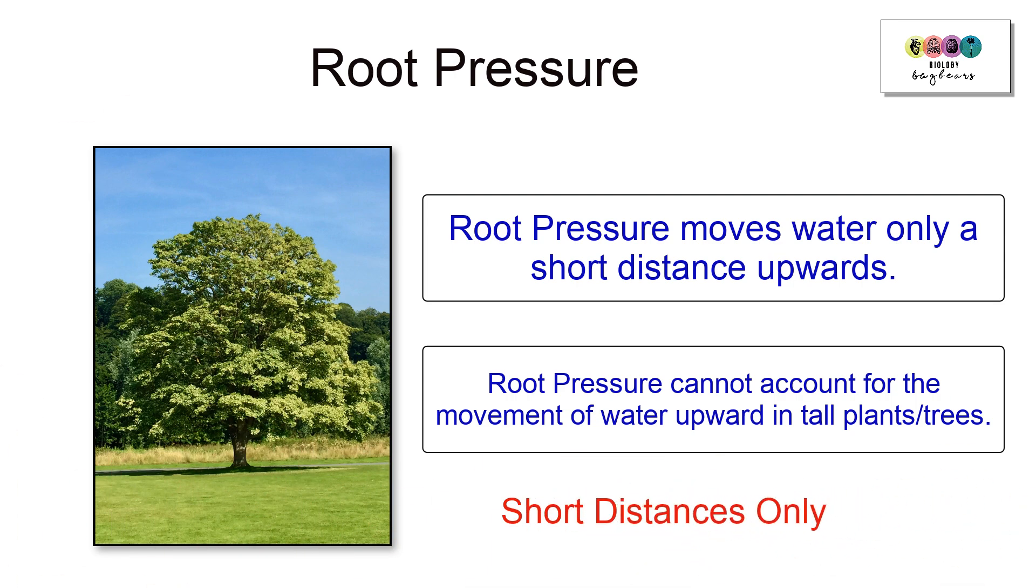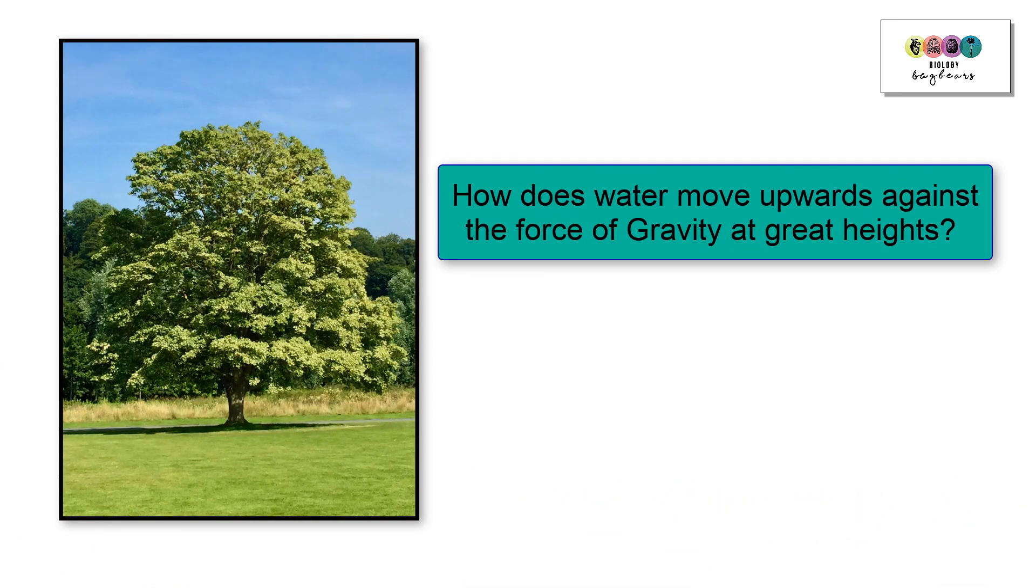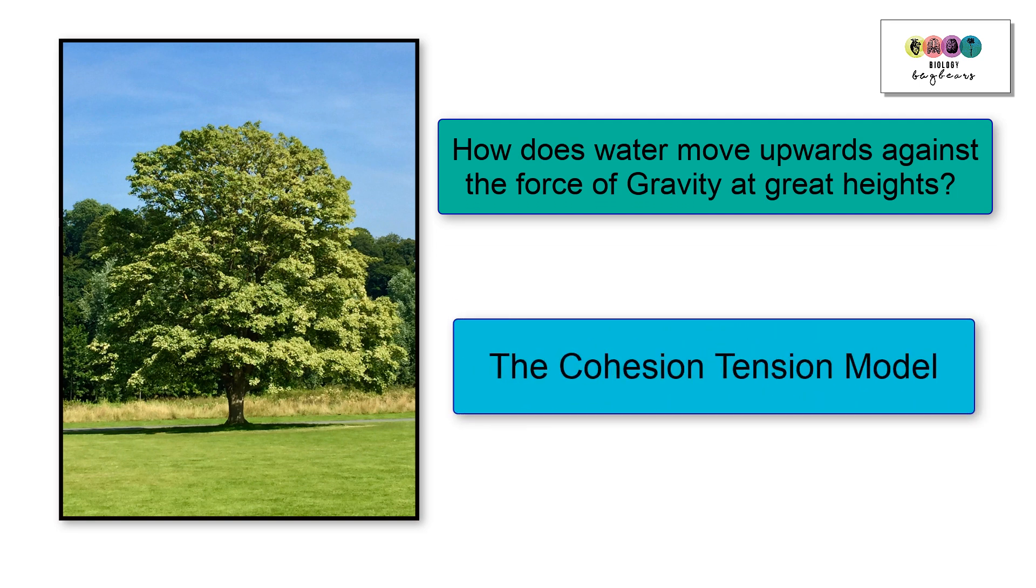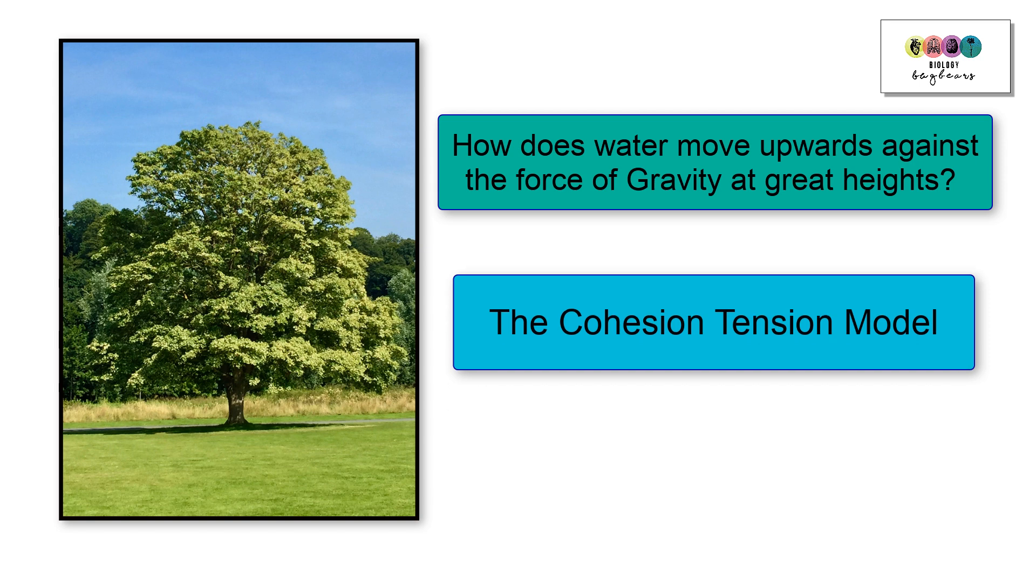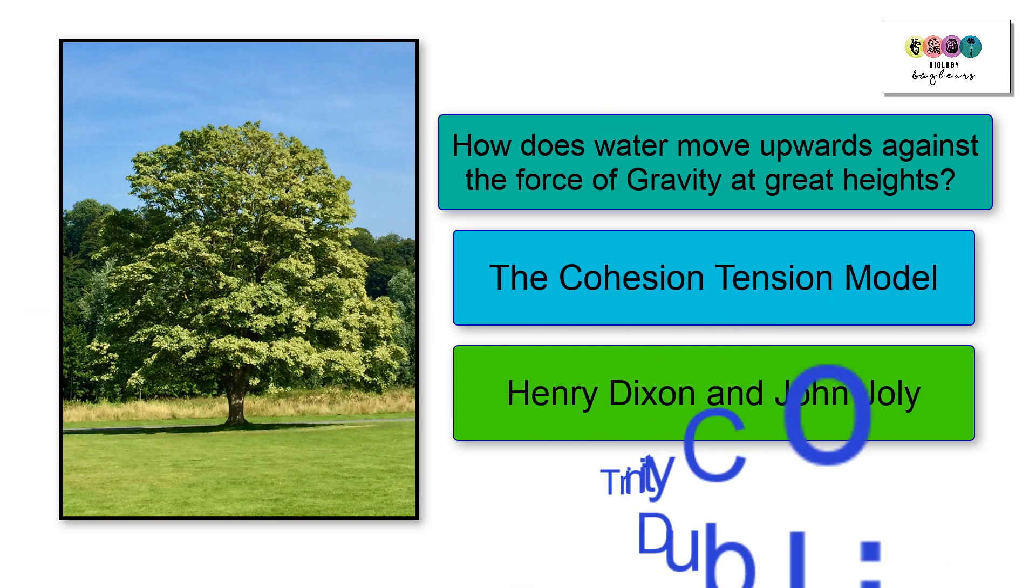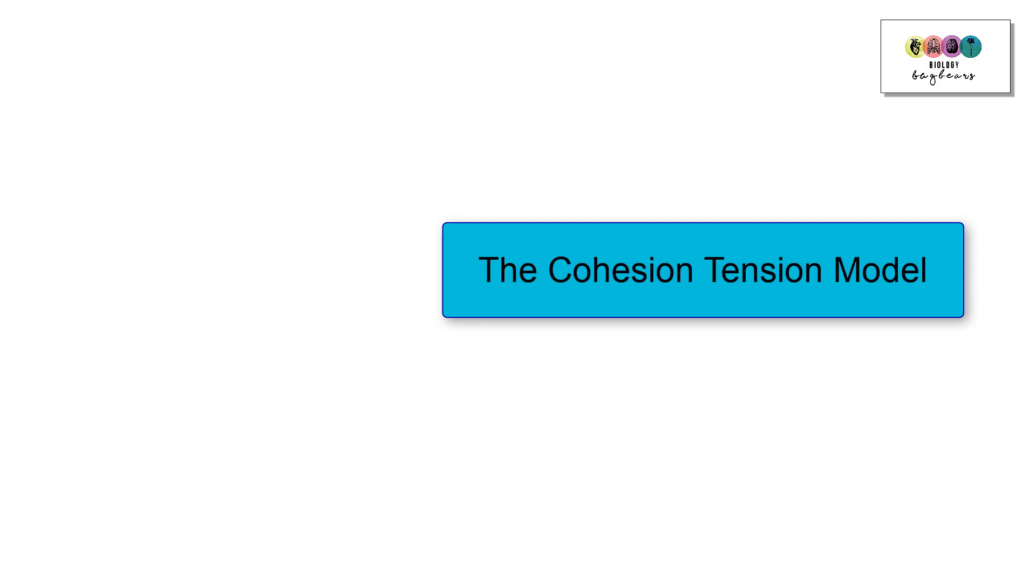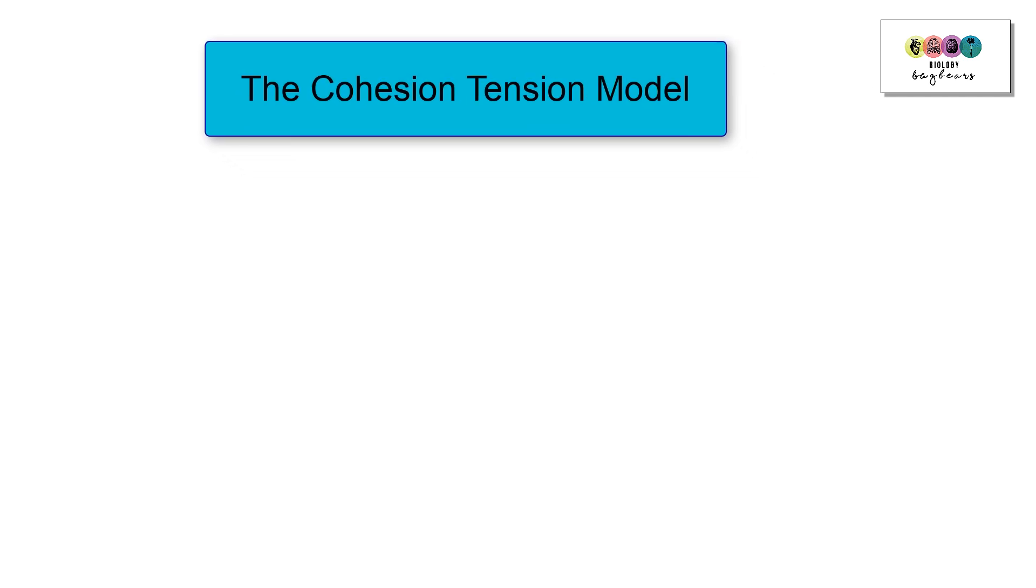To explain how water travels against the force of gravity up through these very tall plants and trees, we use the cohesion tension model. This theory was put forward by Henry Dixon and John Joley, and they were both scientists in Trinity College in Dublin. It's really important that you do know both of their names, as it gets asked frequently in exams.